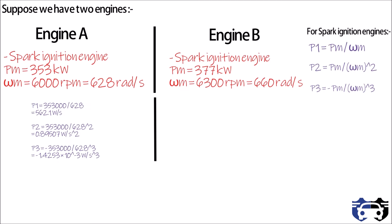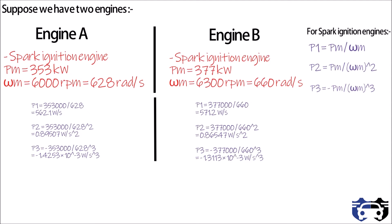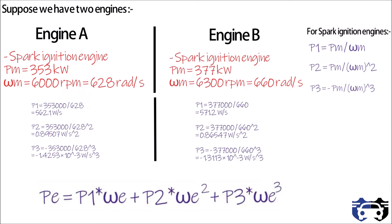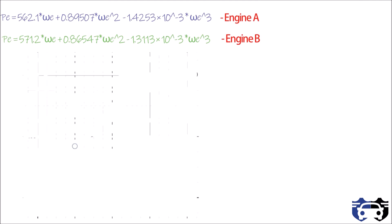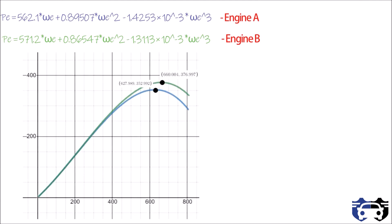Calculating p1, p2, and p3 for engine B gives the corresponding values. Putting these values into the third order polynomial for pe gives the equations for engine A and engine B. Plotting the curve between power in kilowatts and angular velocity in radians per second, we get a curve for each engine — the green curve for engine B and the blue curve for engine A.